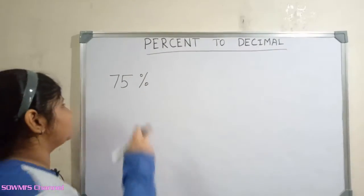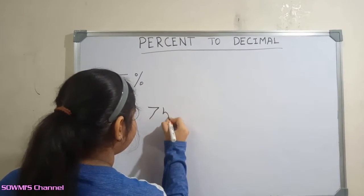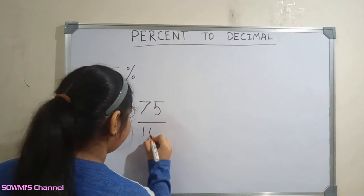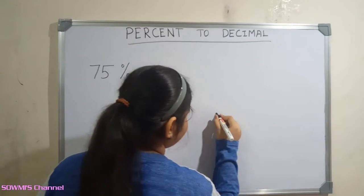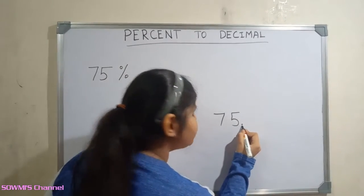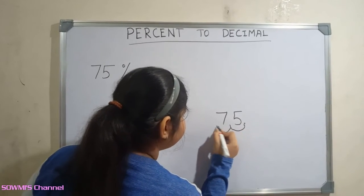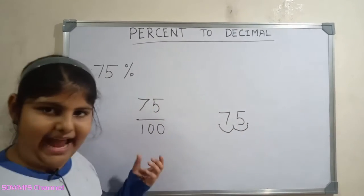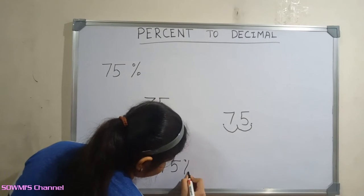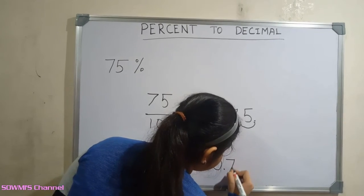Let us see one more example: 75 percentage. First we have to remove the percentage symbol. Next we have to divide the value by hundred. Now we have to move the decimal point two places to the left. So the answer is: 75 percentage is equal to zero point seven five.